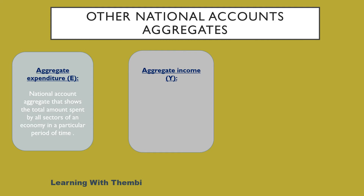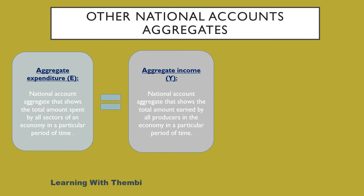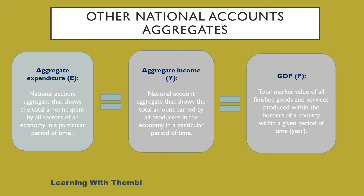The national account aggregate of expenditure shows the total amount spent by households, the government, businesses, and also the foreign sector. The national account aggregate of income shows the total amount earned by all producers in the economy in a particular period of time — the total amount earned by households when they sell their factors of production, the amount earned by the government through taxes, and also the amount earned by firms and the foreign sector. In our discussion of leakages and injections, we said the economy may be in equilibrium, and when it is, aggregate expenditure equals aggregate income, which may also equal the overall production — that is, the GDP.